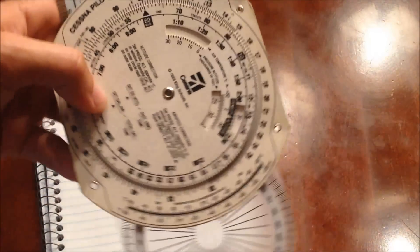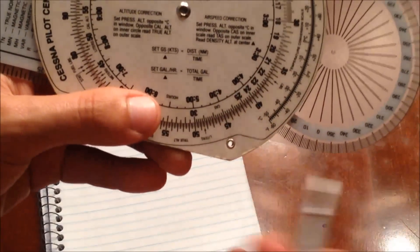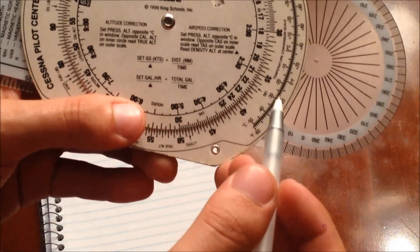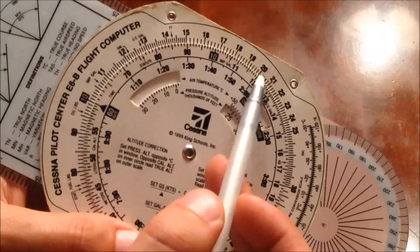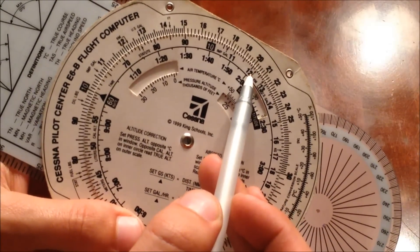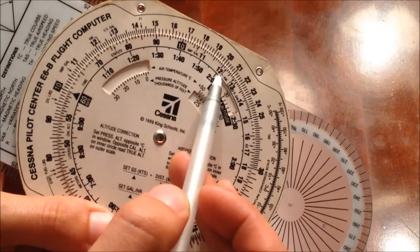So since we're going a distance of 20 miles, if we go back down to the scale, it says distance is on the outer scale. So we would look for the 20, which is right here. And that means under it, we're going to read our time, which is going to be 12 minutes.